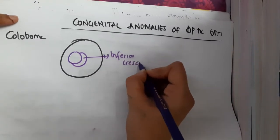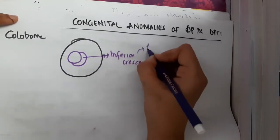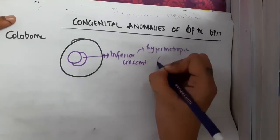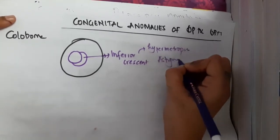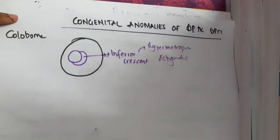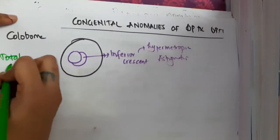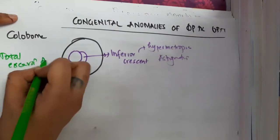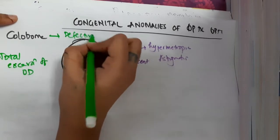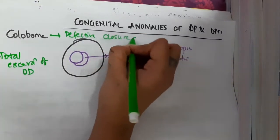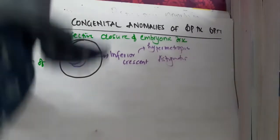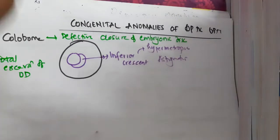Because of defective closure of the embryonic disc, there will be presence of an inferior crescent. Due to this inferior crescent, the patient will have hypermetropia and astigmatism. There will also be total excavation of the optic disc.